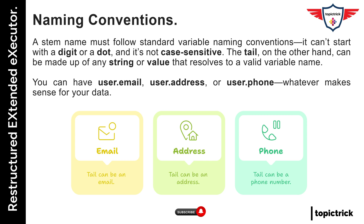Keep in mind that compound variables are not arrays in the strictest programming sense. They don't have a fixed size, and there's no built-in function to return the number of elements. But for practical scripting purposes, they work just like arrays, and that makes them super useful in day-to-day automation tasks.